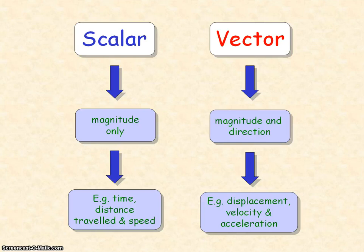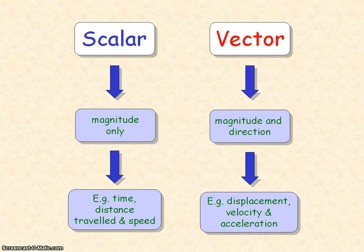For example, you could have a speed of 3 meters per second where you have no direction. But you could have a velocity of 3 meters per second in a northerly direction — it has a magnitude of 3 meters per second and a direction because it's moving northerly.